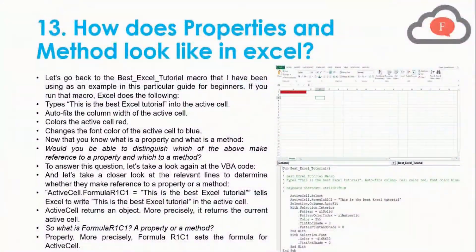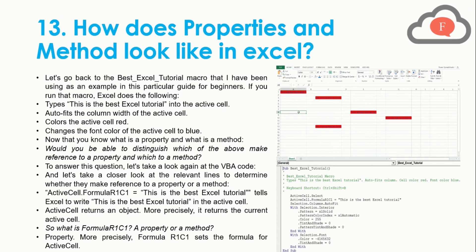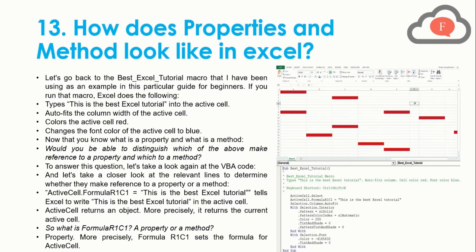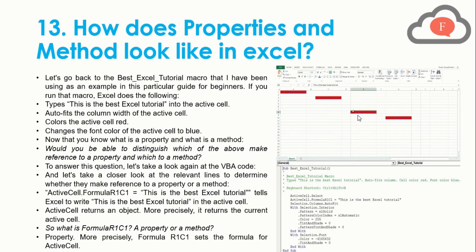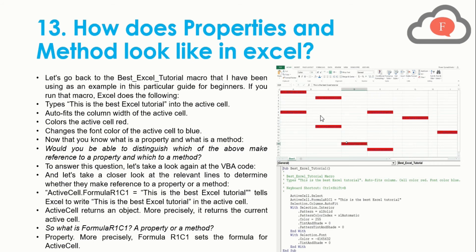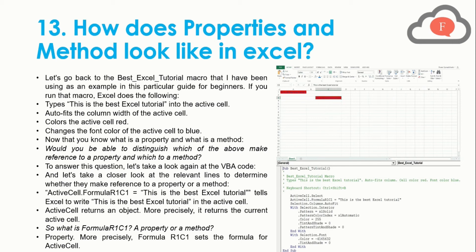We will now move on to the 13th point: how do properties and methods look in Excel? Using the best Excel tutorial macro as an example, when that macro runs, Excel does the following: types 'This is the best Excel tutorial' in the active cell, auto-fits the column width, colors the active cell red, and changes the font color to blue. Now that you know what properties and methods are, can you distinguish which of the above refers to a property and which to a method?